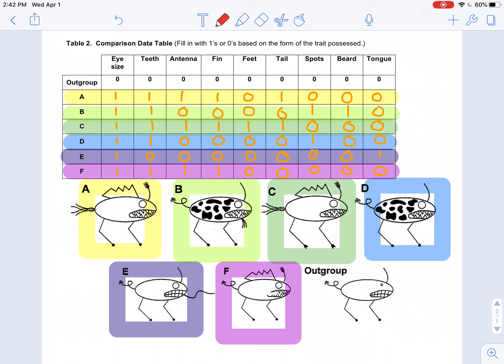So for example, Organism A, if we just read across that really fast to make sure you understand how this works. For A, eye size, I have a 1 because they have large eyes. For A, teeth, I have a 1 because they have pointy teeth. For A, antenna, I have a 1 because it is a branched antenna. For A, fin, I have a 1 because they do have a fin present. For A, feet, I have a 0 because they have flat feet.